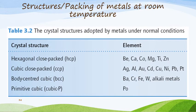On this slide are some examples of crystal structures adopted by metals under normal conditions. For hexagonal close-packed structures, you'll see the majority of those metals listed. For cubic close-packed structures, we have those metals shown. For body-centered cubic, you will see those metals. And to the best of my knowledge, the only primitive cubic structure is that of polonium.